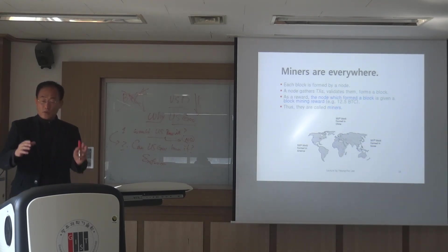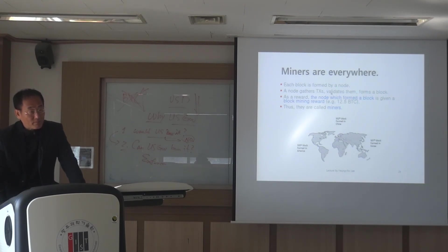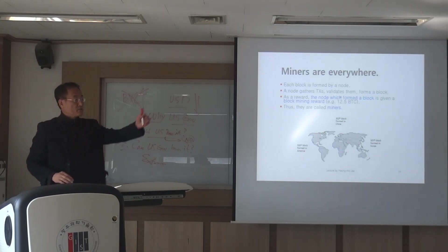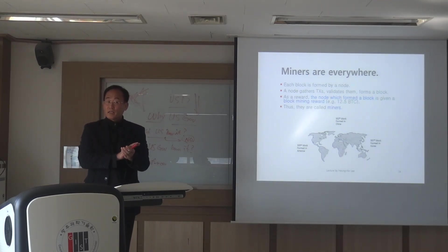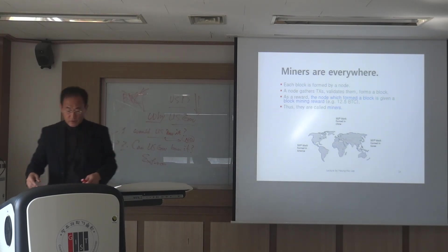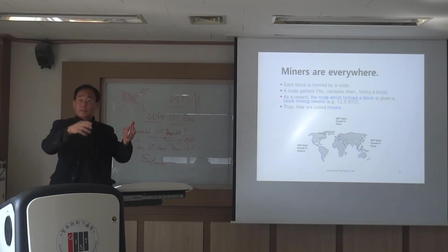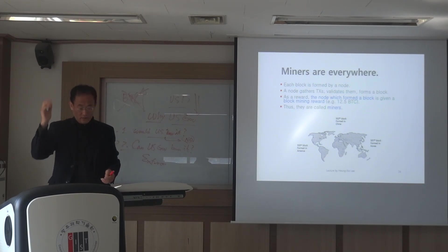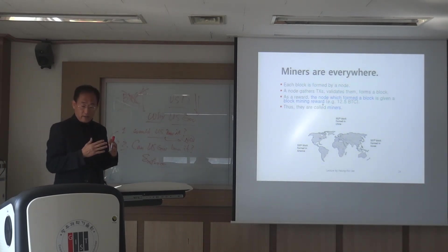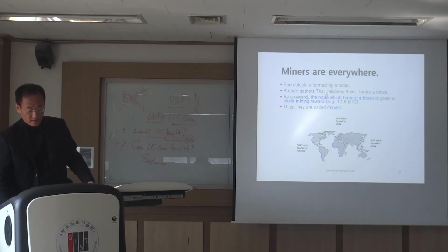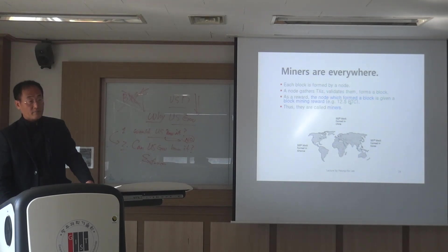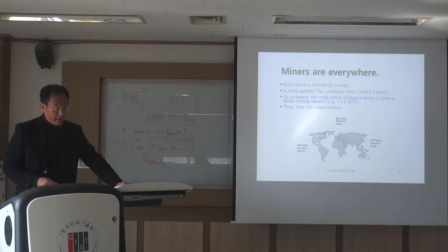Open ledger and open network — miners are everywhere currently. Each block is formed by a node. A node gathers transactions, validates them to see if there is any double spending problem and to see if person A has enough amount of money in his account. If there is no double spending problem, the validator puts these transactions into the block, timestamps it, adds proof of work, and publishes it. That's what miners do — since miners are doing this work, they get a block reward, which is currently 6.25 Bitcoin because it has halved again.